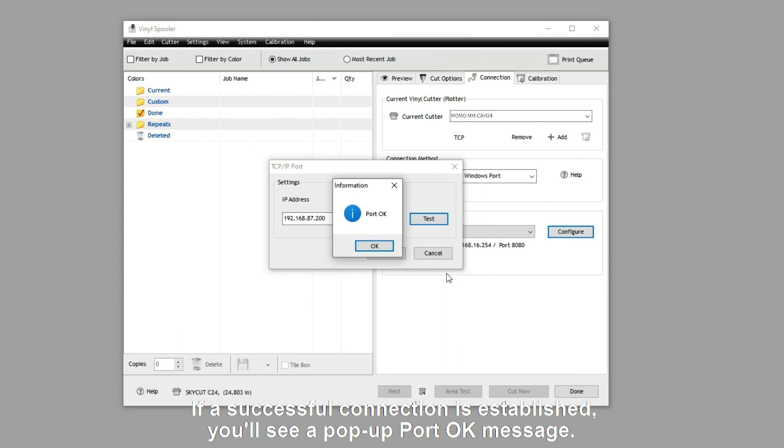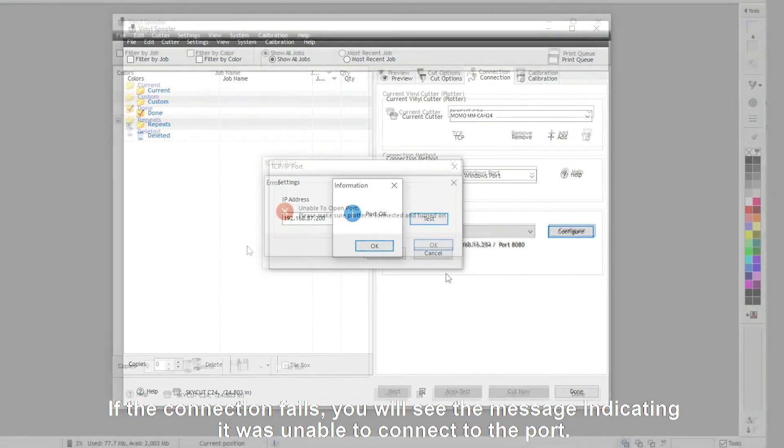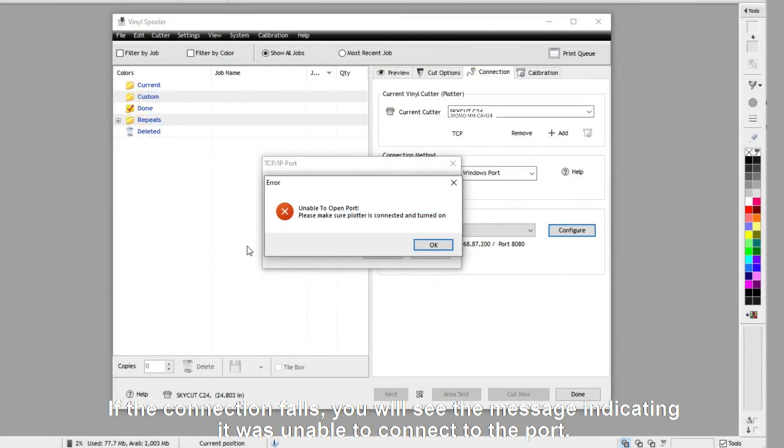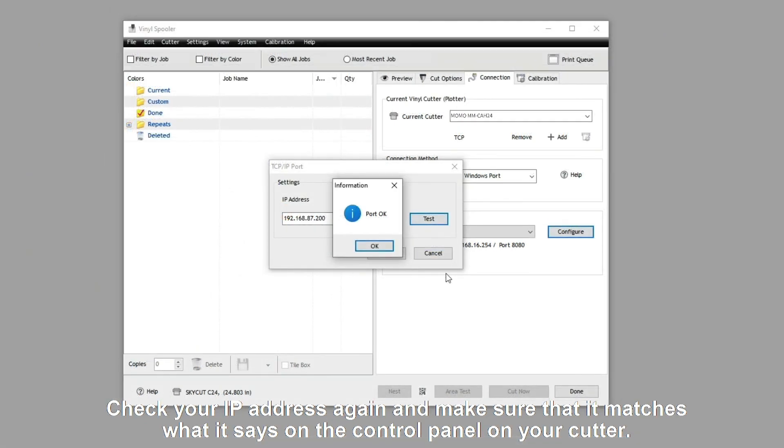If a successful connection is established, you'll see a pop-up port OK message. If the connection fails, you'll receive a message indicating it was unable to connect to the port. Check your IP address again and make sure that it matches what it says on the control panel on your cutter.